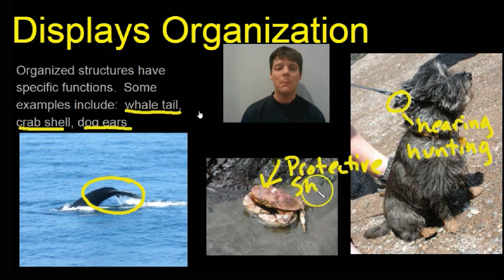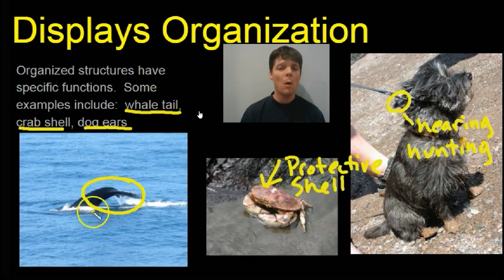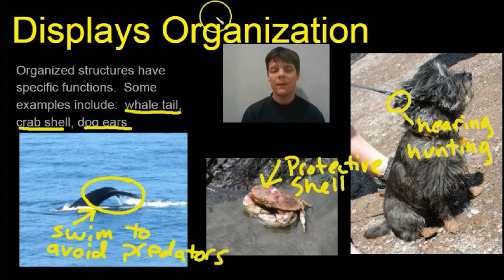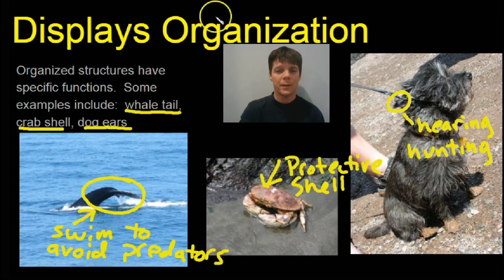The crab's shell is a protective covering. It doesn't protect crabs from all predators, but it does protect the crabs from many things that would eat them. The whale's tail allows the whale to swim very quickly in an aquatic environment, and this helps the whale to avoid being eaten by predators.